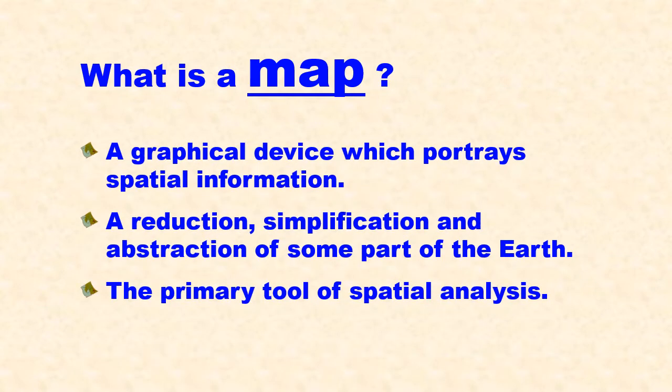A good place to start is defining the term map. What is a map? I want to provide a definition that would fit for all kinds of maps. Simply put, a map is a graphical device that portrays spatial information. Now you've used graphical devices before, like pie charts and line graphs and bar charts. Those are graphical devices, but they're not maps because they're not showing information spatially.